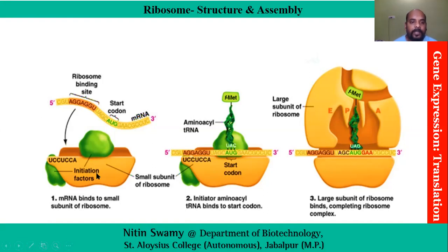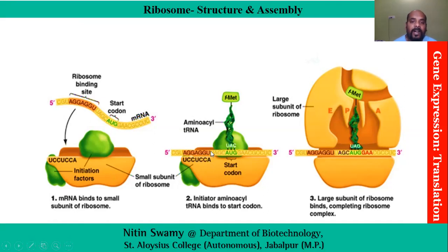Ribosomes can be divided into large and small subunits. Various initiation factors bind to the small subunit, which then binds to the incoming mRNA, and the large subunit subsequently joins the complex. To ensure proper affinity between mRNA and ribosome, the small subunit contains the sequence UCCUCCA, which binds to a complementary sequence in the mRNA that is upstream of the AUG sequence. This pairing ensures proper affinity between the ribosome and mRNA.